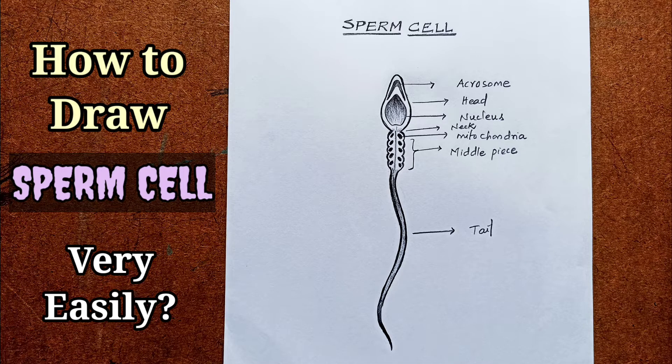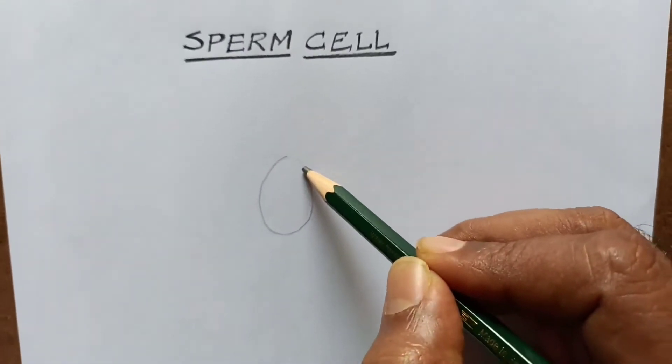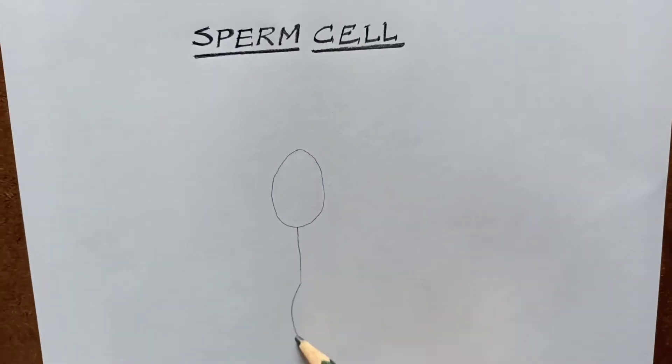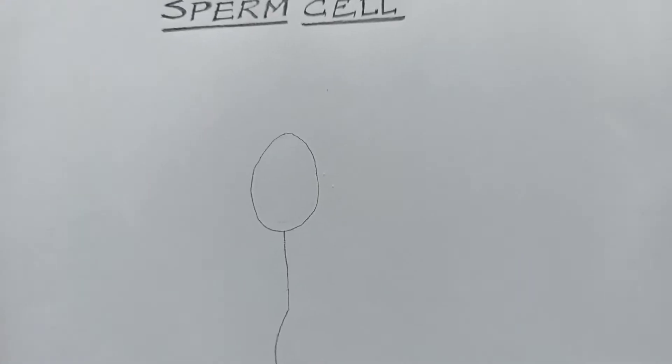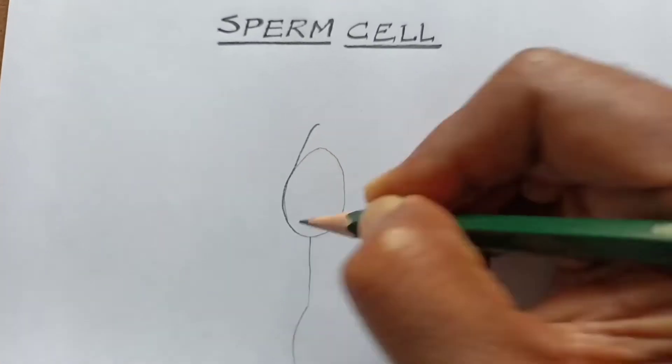Good morning students. Let us see how to draw a sperm cell very easily. First of all, you draw the outline like this. Now we have to develop this diagram. Let us start with the head portion. You draw like this.